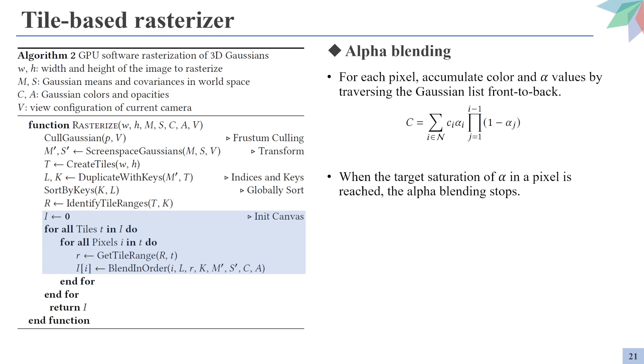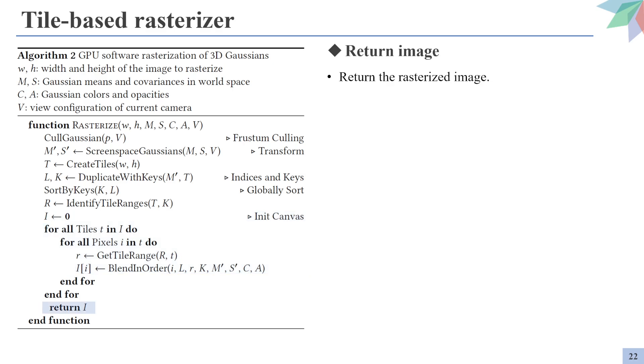Then, beginning from the front of the list, the Gaussians are applied alpha blending to compute the color for each pixel. The alpha blending continues through the list of Gaussians until the accumulated saturation of the Gaussians reaches the target value, which is in most cases 1. And after the colors of the pixels are determined, the final image is returned from the rasterizer.